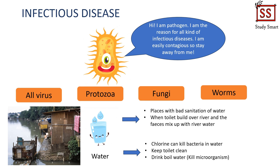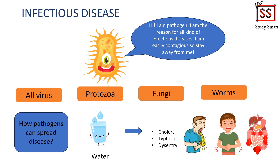To prevent this, adding chlorine to water can help kill bacteria. Always keep toilets clean and drink only boiled water. Diseases caused by pathogen transmission through water include cholera, typhoid, and dysentery.